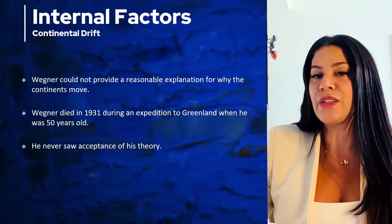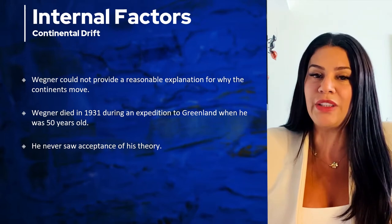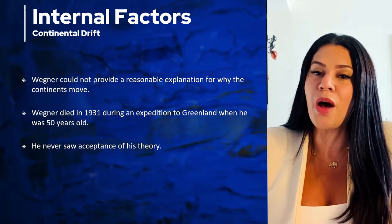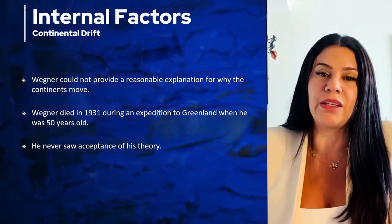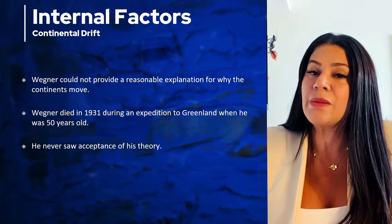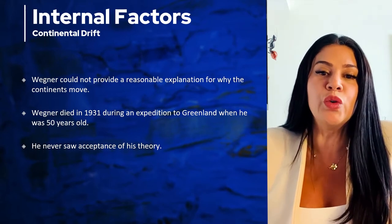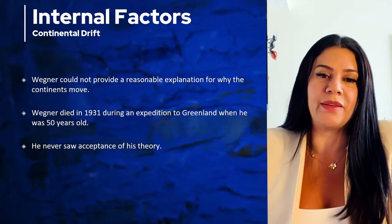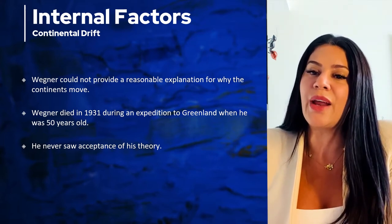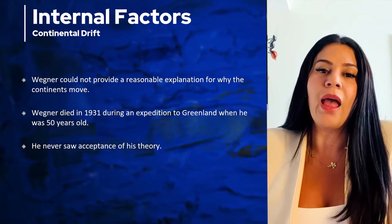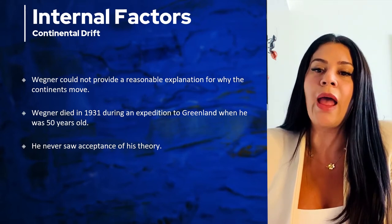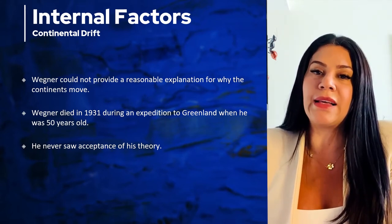What Wegener proposed is what we now know as the theory of continental drift. But what was the reaction of the rest of the scientific community? In fact they thought that he was crazy. Part of the problem was that Wegener wasn't a geologist, and the geologists asked Wegener to explain what made these continents move, but he couldn't do it. So the geologists used this against him to discredit his theory, and unfortunately Wegener died when he was 50 years old and never got to see his theory accepted.